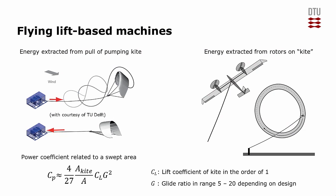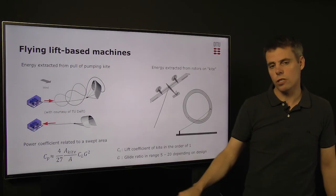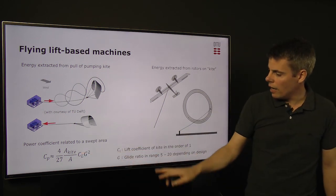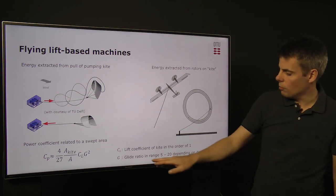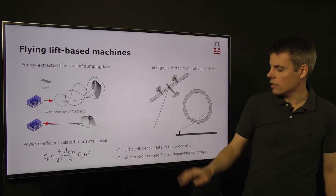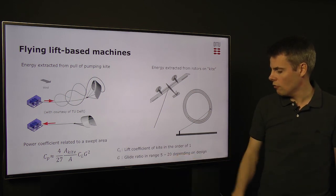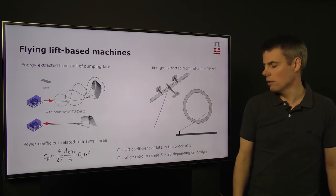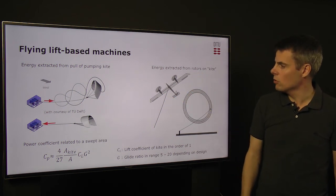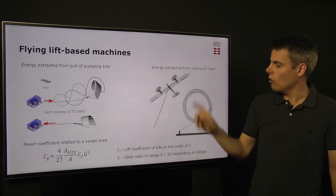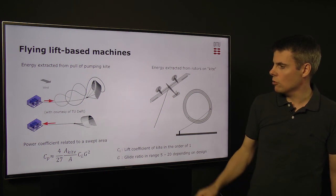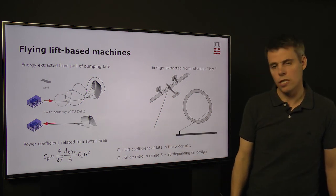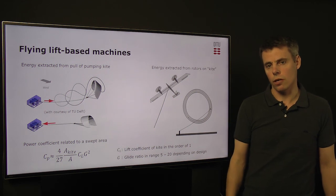For these concepts, the power coefficient or the power produced is based on the area of the kite and the lift coefficient of the kite which is typically in the order of one. It is also based on the glide ratio of the kite itself which is in the range of 5 to 20 depending on the design. A high aspect ratio kite or plane like this one will have a high glide ratio while a typical kite that you see on the beaches will have a lower glide ratio.